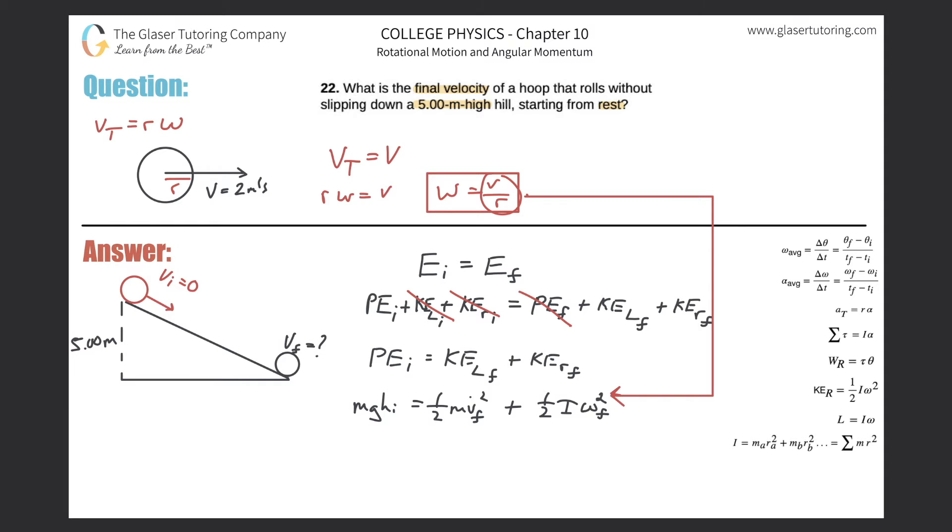So, now what I can do is I can take this. Remember, this is right here. This is linear velocity. This is just V. I'm going to take this result and now plug this on N for omega down here. Now, let's see what we get. So, now it's MGHI. MGHI is equal to one half MVF squared plus then. And, by the way, if this is the final angular velocity, then this is the final linear velocity. So, that will then be plus one half I omega F, which is what we just defined VF over R, and this whole thing is squared.